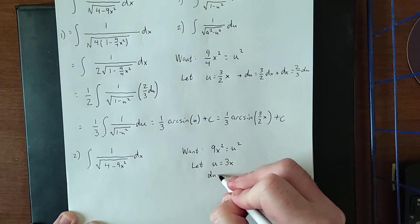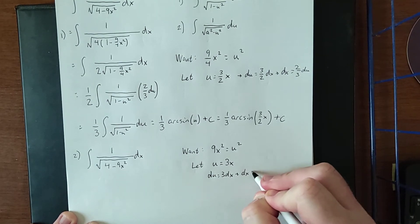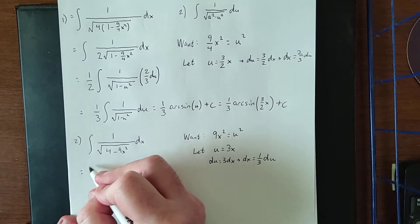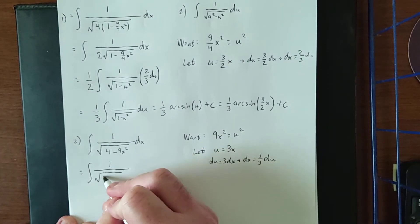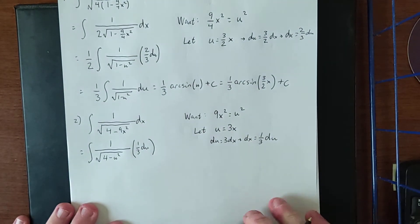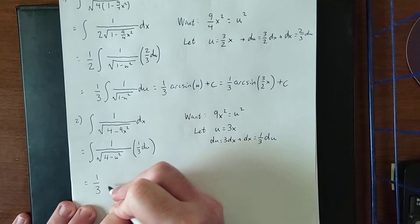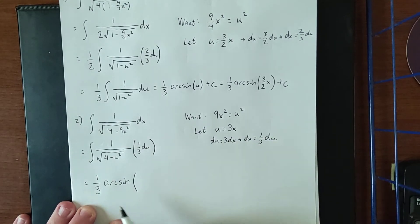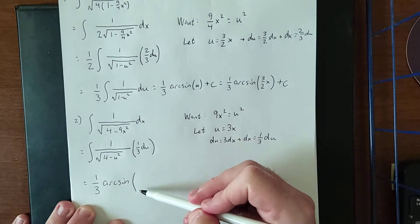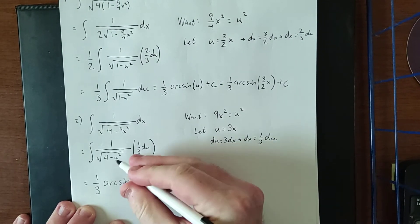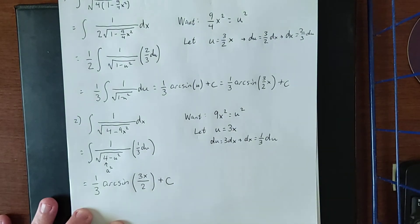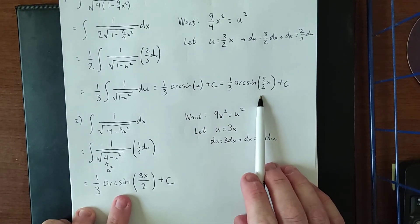For the differential, du equals 3 dx, or equivalently dx equals 1/3 du. Making this substitution, we get 1 over the square root of 4 minus u squared, with a 1/3 du. Everything is now in the form needed to apply the arcsin formula. When we have a squared minus u squared, the result is arcsin of u over a. Here u is 3x and a equals 2 (since a squared equals 4). Both strategies yield the same answer, just written slightly differently.